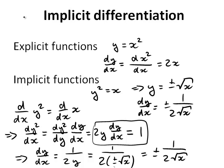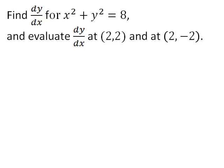This was a very basic example. Let's have a look at something a bit more difficult. For instance, let's try to find dy by dx for x squared plus y squared is equal to 8. And let's then evaluate dy by dx at two points: first at (2, 2), and secondly at (2, negative 2). We'll also have a look at a graphical explanation for what we're doing in a moment.